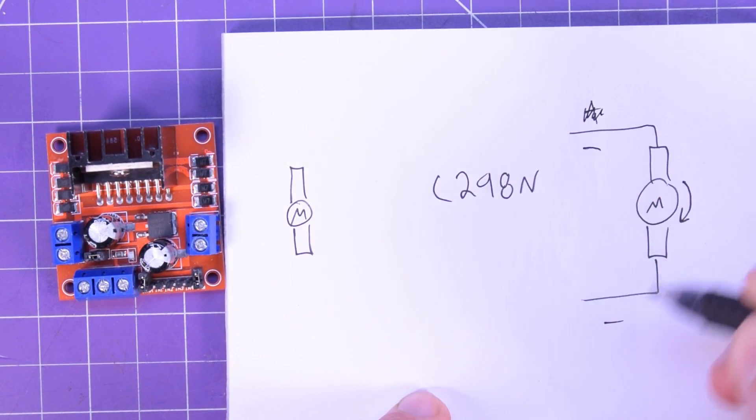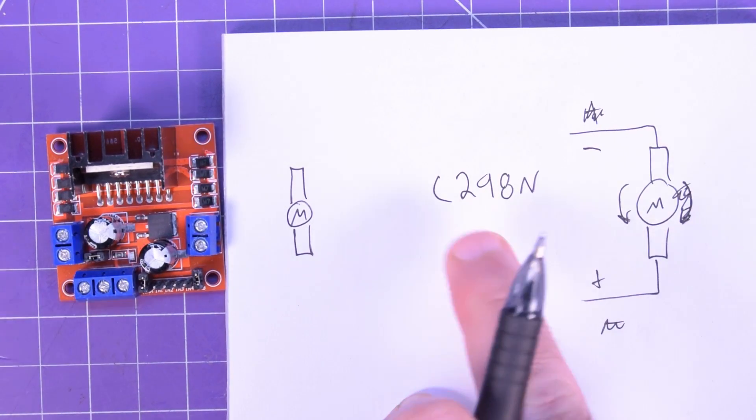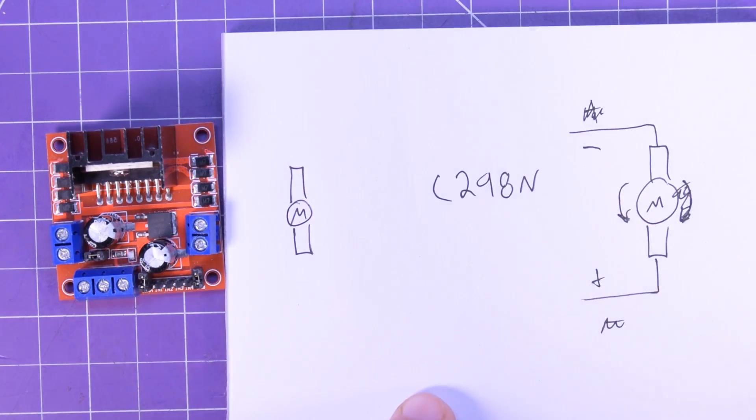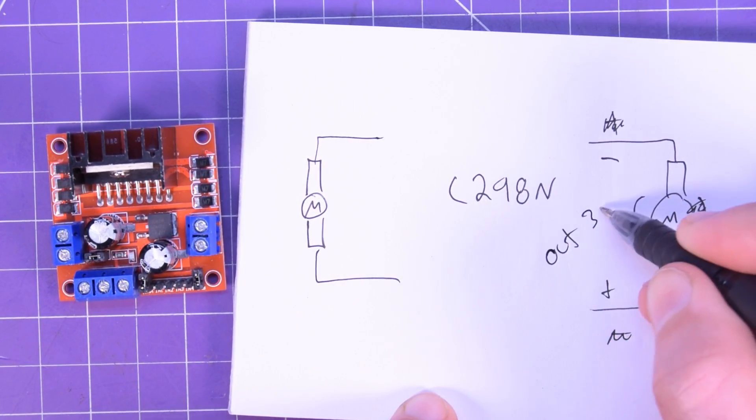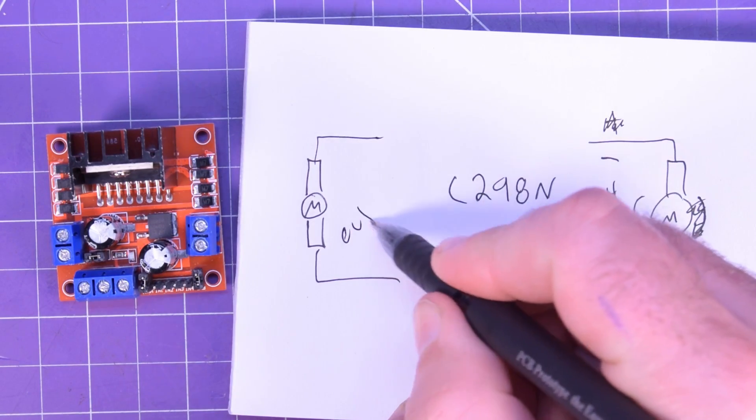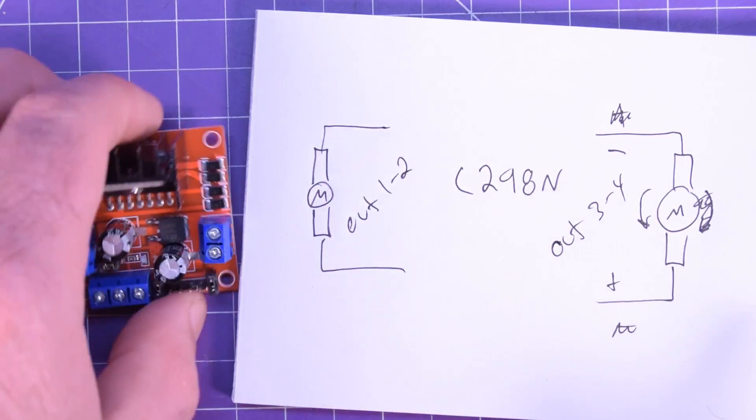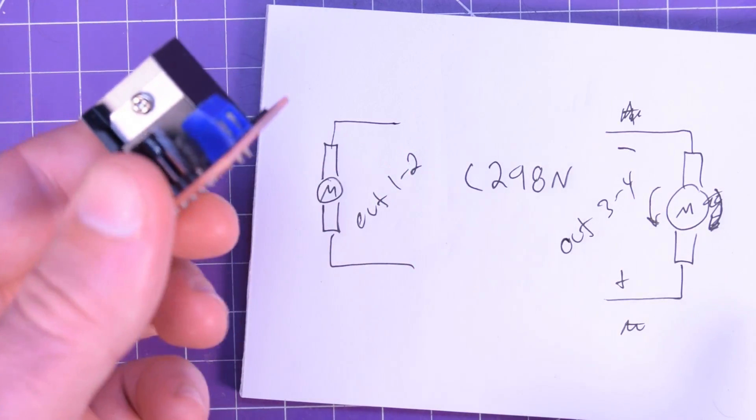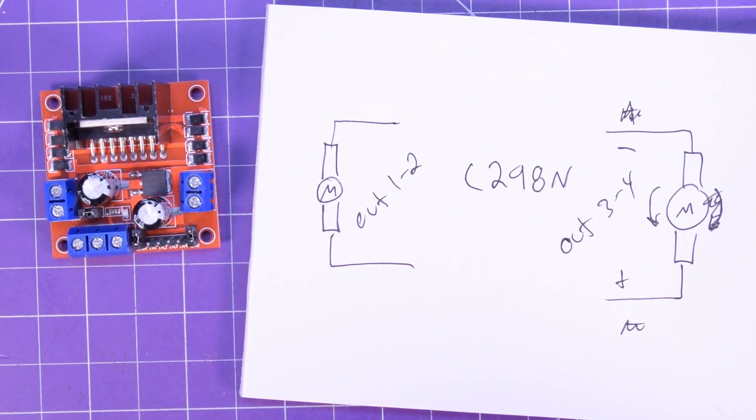But then if you swap the leads from positive to negative and negative to positive, then the motor will actually spin in the other direction. And the L298N can handle two of these motors simultaneously, one on out 3 and 4 and one on out 1 and 2. So that's a pretty easy way to drive two motors. So let's put the motors together onto this thing and I'll show you exactly how that works.